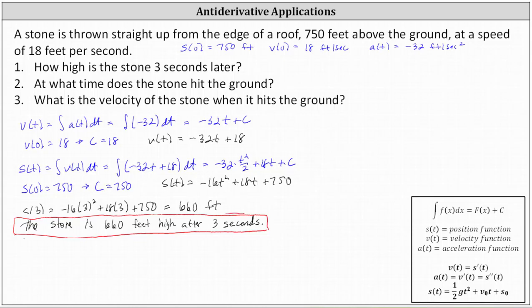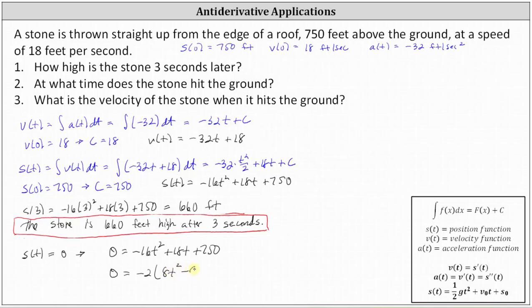Number two: at what time does the stone hit the ground? The stone hits the ground when the height is zero, or when s of t equals zero. So we need to solve zero equals negative 16t squared plus 18t plus 750. To begin, let's factor out negative two, which gives us negative two times eight t squared minus nine t minus 375.